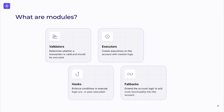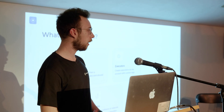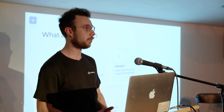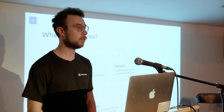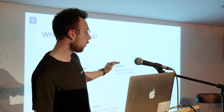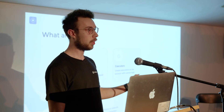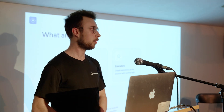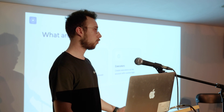The third module type is hooks. Those are triggered before and after execution, and you can use them to enforce certain conditions. One example is spending limits — you could say you want this specific key on your account to only be able to spend 200 USDC per day. Before execution, the hook checks if the spending limit is already reached and denies it if so. After execution, the hook can update the spending value or reject the transaction if it exceeded the limit.